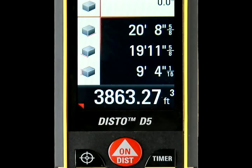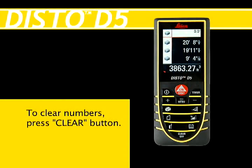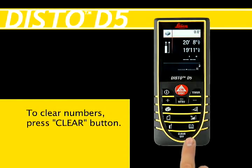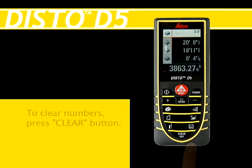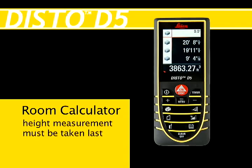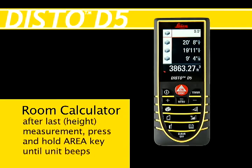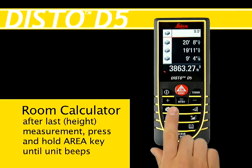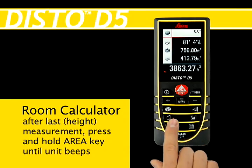To clear the numbers on screen and start again, press the clear button at the bottom of the keypad until the individual measures disappear. It is imperative to take the height measurement last if you wish to use the room calculator function. To have the DISTO calculate the room dimensions, press and hold the area/volume key until it beeps.